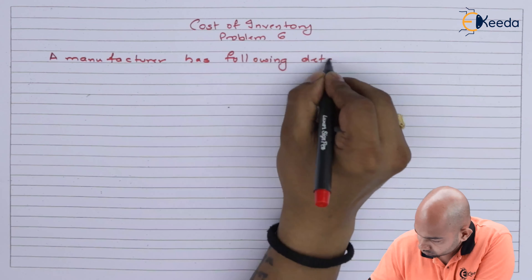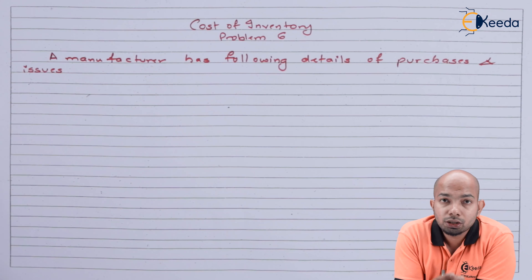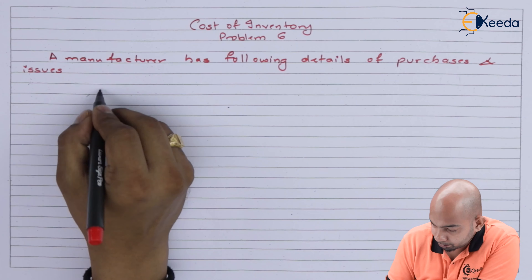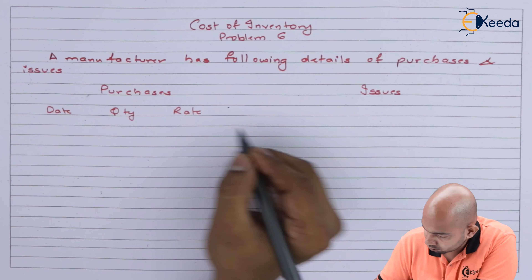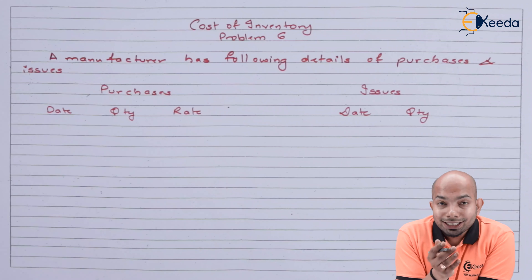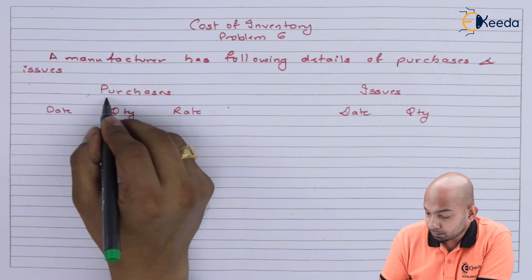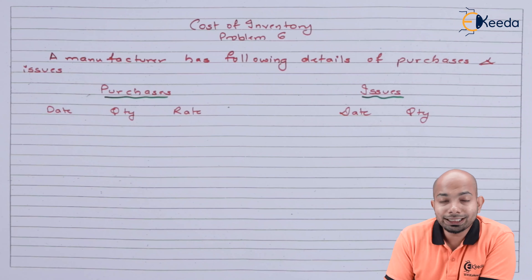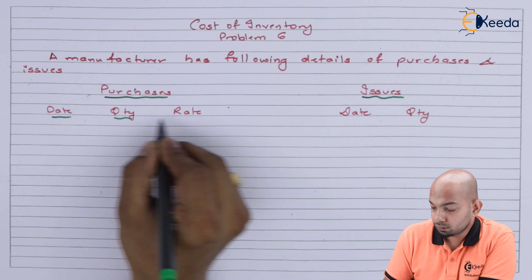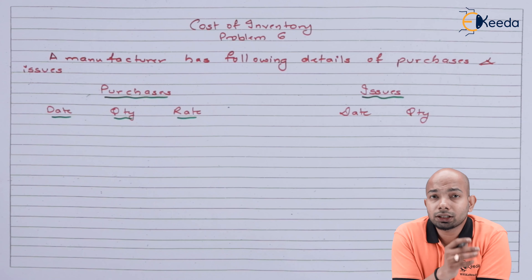The question relates to a manufacturer who has given certain details about his purchases of items and issues or consumptions. The page has been divided into two sections: one is purchases and the other is issues. Purchases has three columns — date, quantity, and rate — and the issue section has only two columns: date and quantity issued.